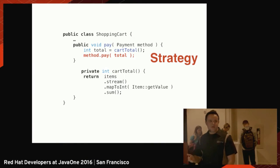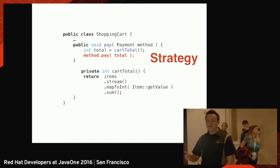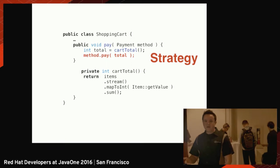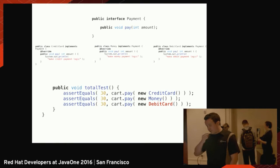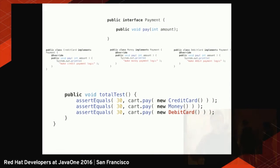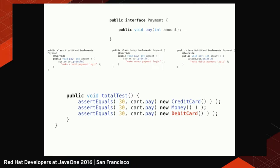That's really good for the strategy pattern because with the single responsibility principle, when I add a new payment method I don't have to change my shopping cart. If I create a new type like debit card, I just add an implementation. That is good and we lived well with that. But the bad part is that as my system grows I start to have a lot of small classes and I have to build a whole type system to make the strategy work.